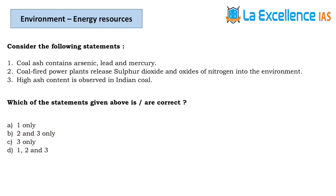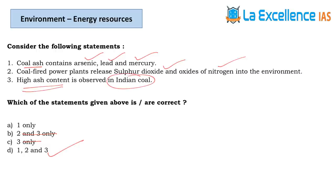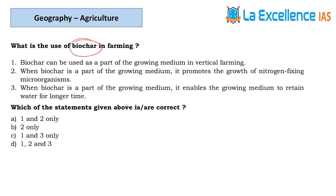The next question is about coal ash. Statement 1 — it contains arsenic, lead and mercury. When coal is burnt, mercury, cadmium, chromium, arsenic, selenium are released — statement 1 is correct; eliminate other options. Statement 2 — coal-fired power plants release sulfur dioxide and oxides of nitrogen; also correct. Statement 3 — Indian coal has high ash content, because of which we go for higher imports of coal. Answer is D.